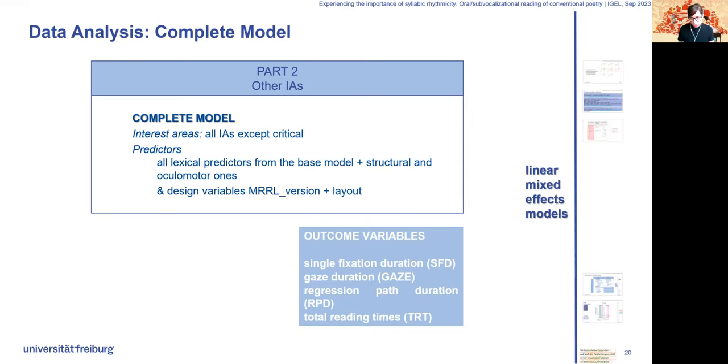We also looked at all other words of the poem, and we used our complete model for that. The complete model focused on effects of the design factors on all other words of the poem except the ones we looked at in the main model. All lexical predictors from the base model, for example, indicators for sub-vocalization like number of syllables and consonant-vowel quotient, as well as structural and oculomotor ones were included in this one, plus factor layout and factor version. Again, for all the time measures, we computed residual reading times.